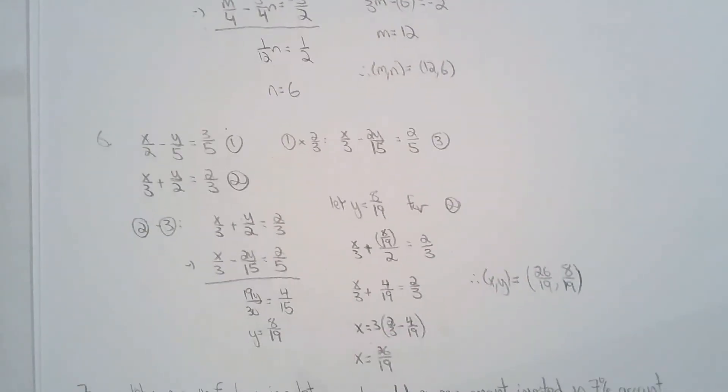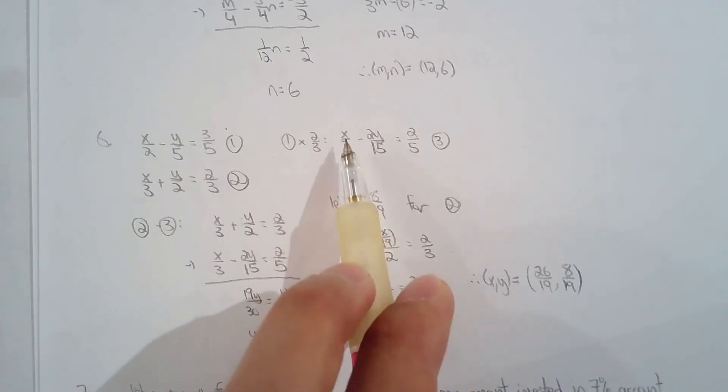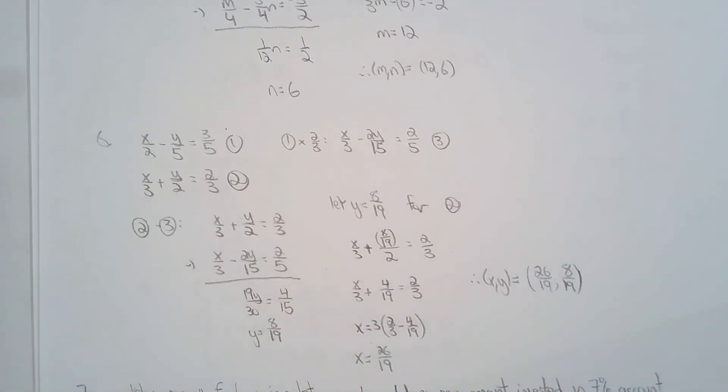Same with number 6. I tried to be a little fancy. I took the first equation and multiplied it by 2 thirds. Because then I'll have x over 3 and x over 3. Once again, subtract the equations and eliminate x.